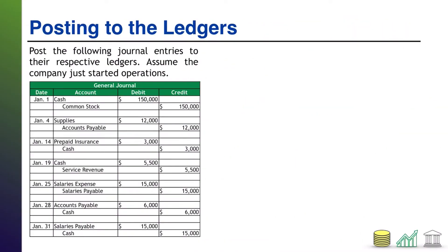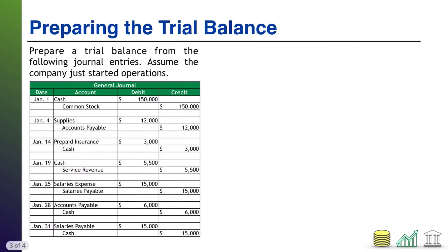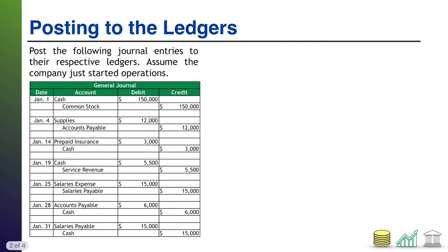Here we go. I give you a series of journal entries and I tell you post the following journal entries to their respective ledgers. And then I give you another page where I say now use those ledgers to make the trial balance. I also tell you to assume the company just started operations. The only impact that assuming the company just started operations has is all ledgers start with a zero balance instead of something already in them. With that said, go ahead and pause the video. Try this out for yourself. And when you're ready, come on back. I'll walk through the solution.